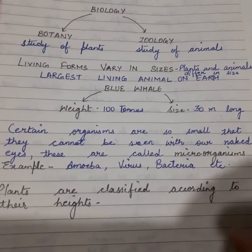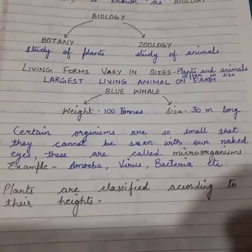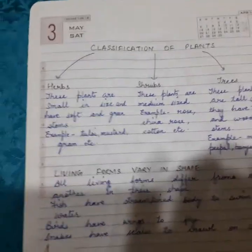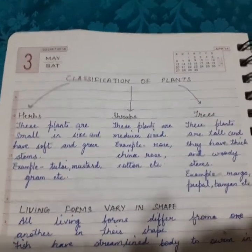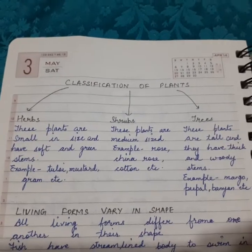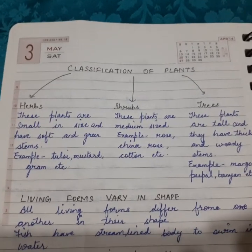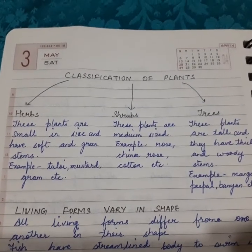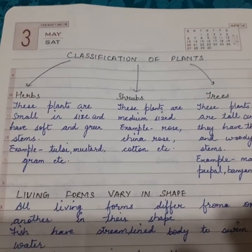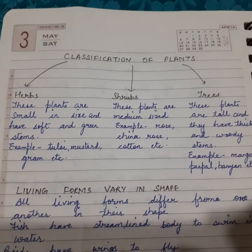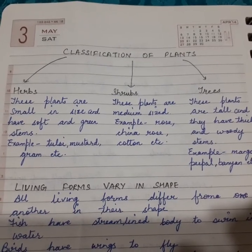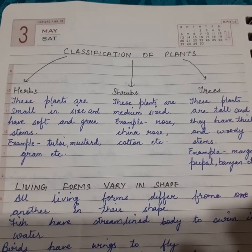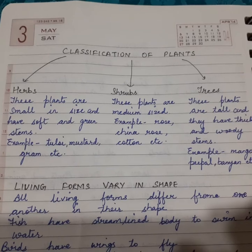Plants are also classified into three categories: herbs, shrubs, and trees. Herbs are the plants that are very small in size and have soft and green stems. Examples: tulsi, mustard, gram, etc.